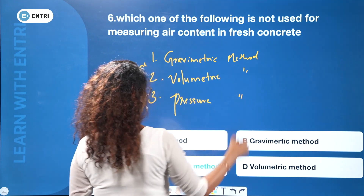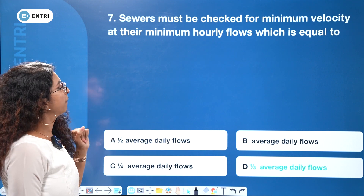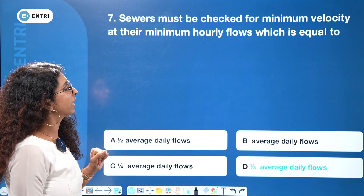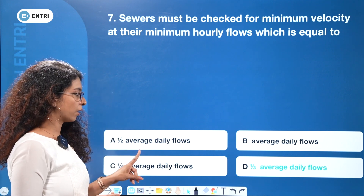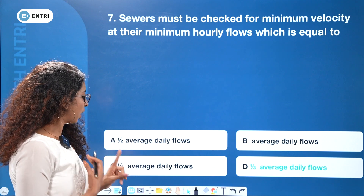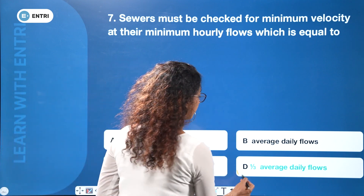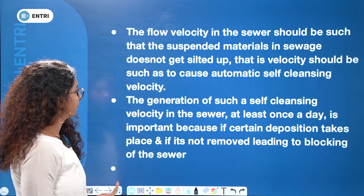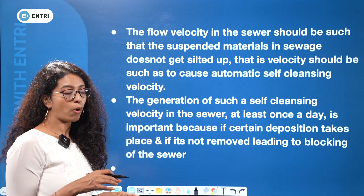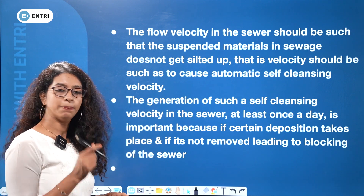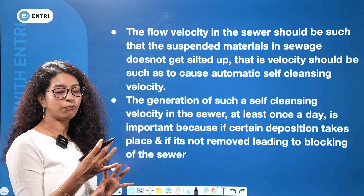This method must be checked for minimum velocity at minimum hourly flows, which equals 1/3 of average daily flow. The answer is 1/3 of average daily flow. This relates to the sewer — minimum self-cleansing velocity of 0.75 m/s must be checked. You should check the dry weather flow.